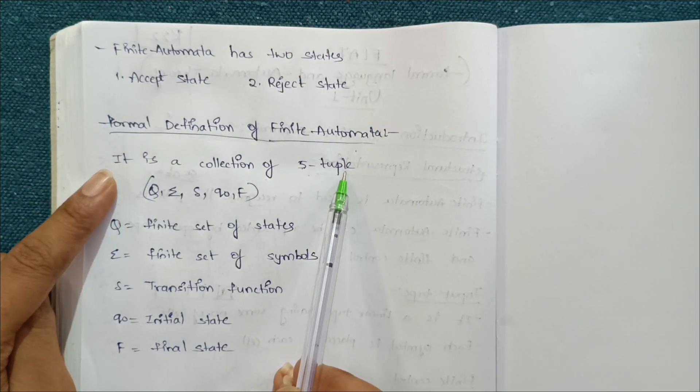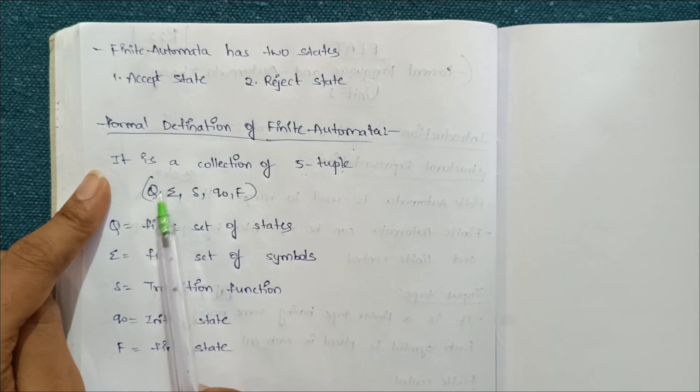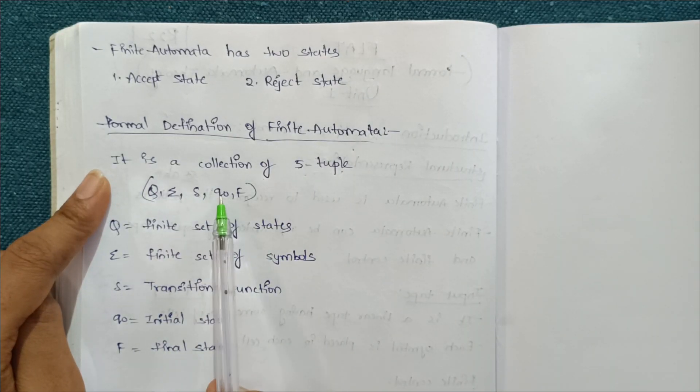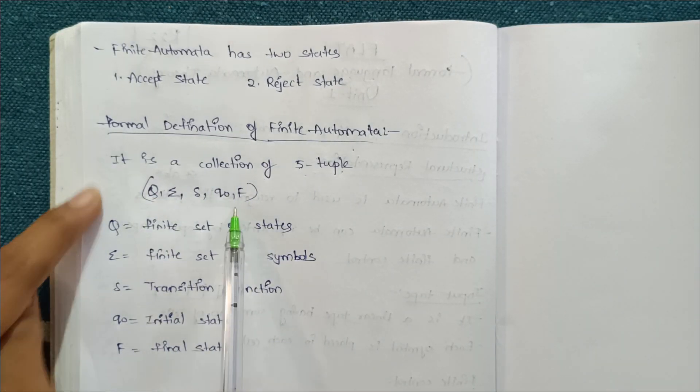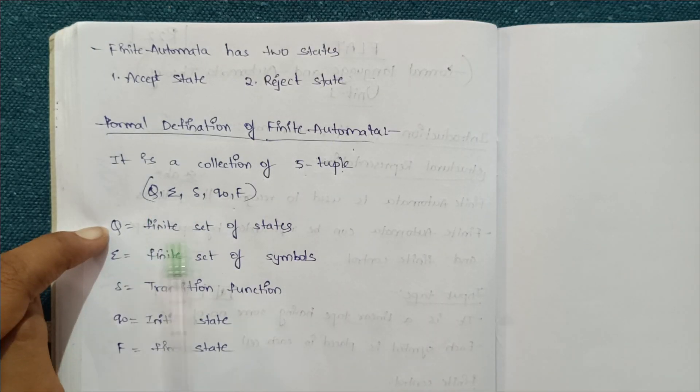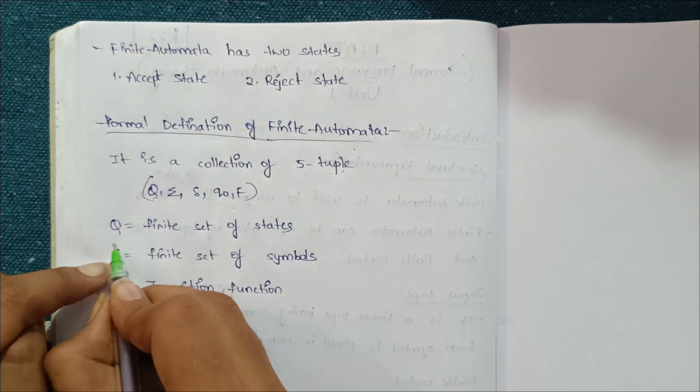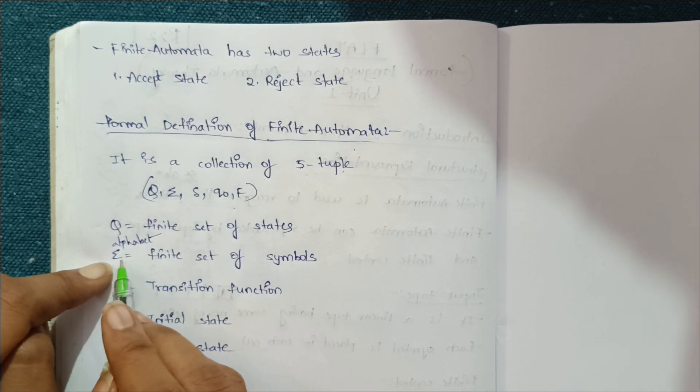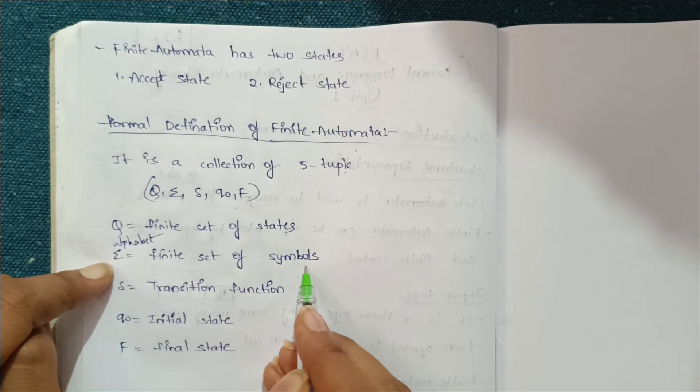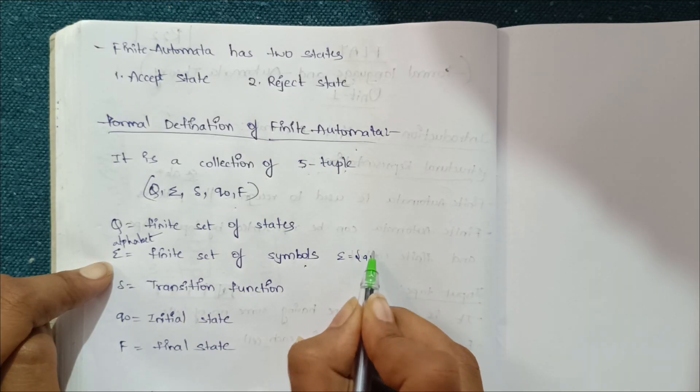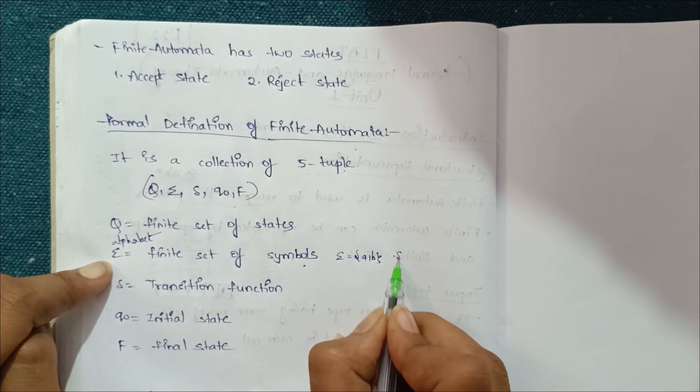It contains five tuples: Q, alphabet Σ, transition function δ, q₀, and F. Q is the finite set of states. Alphabet Σ is the finite set of input symbols like a, b or 0, 1. We have a finite set of symbols.